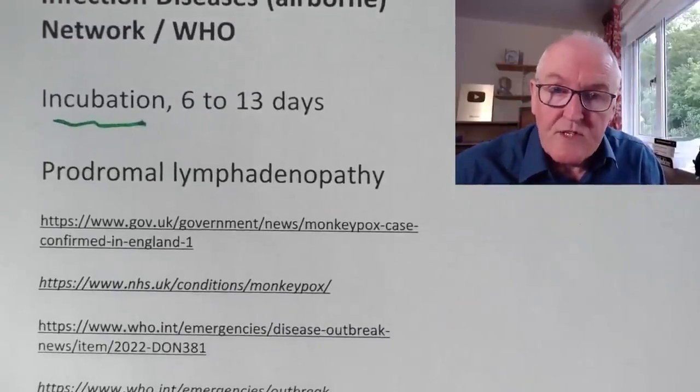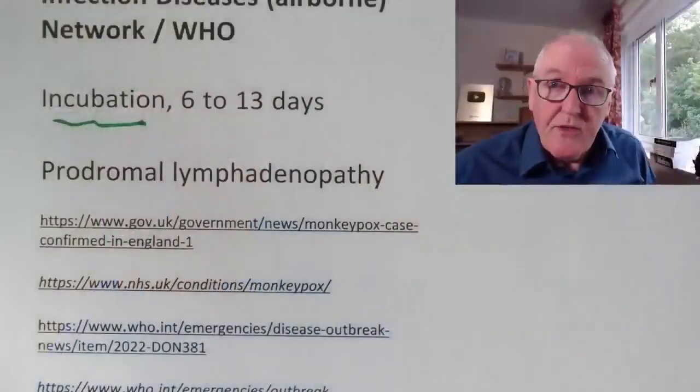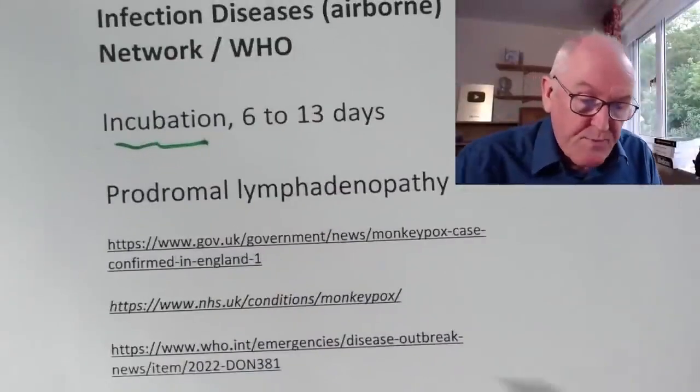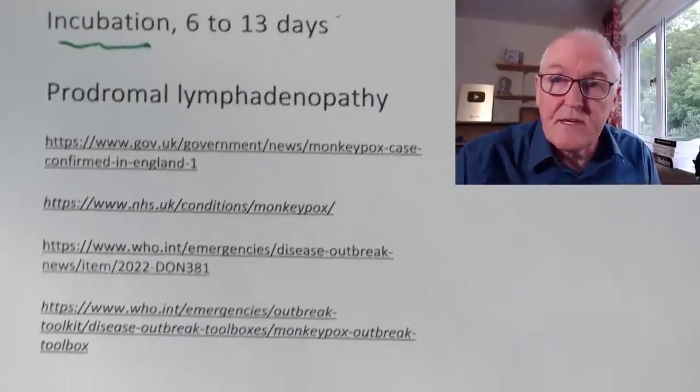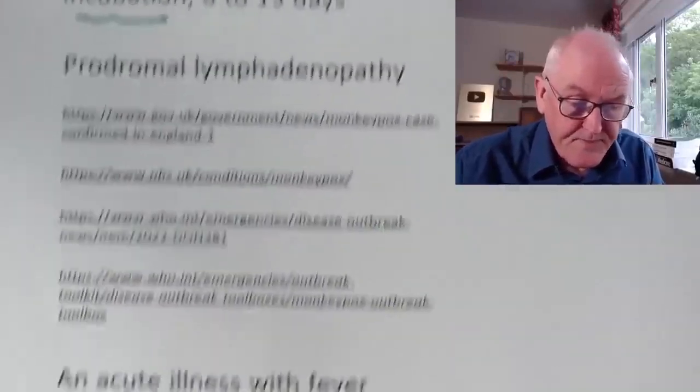The prodrome is when someone starts feeling ill before they have any specific features, and lymphadenopathy is swelling in the lymph glands, such as may occur in the neck, under the chin, in the armpits, or in the groin. This lymphadenopathy is prodromal — it comes on early when the person just starts to feel ill.